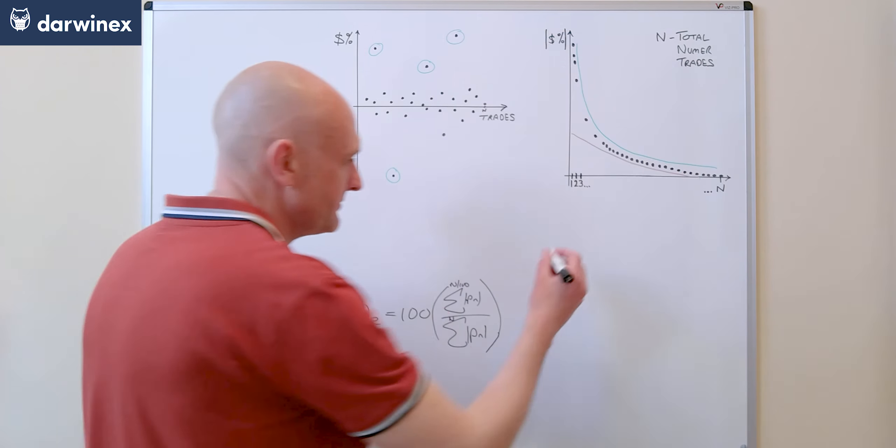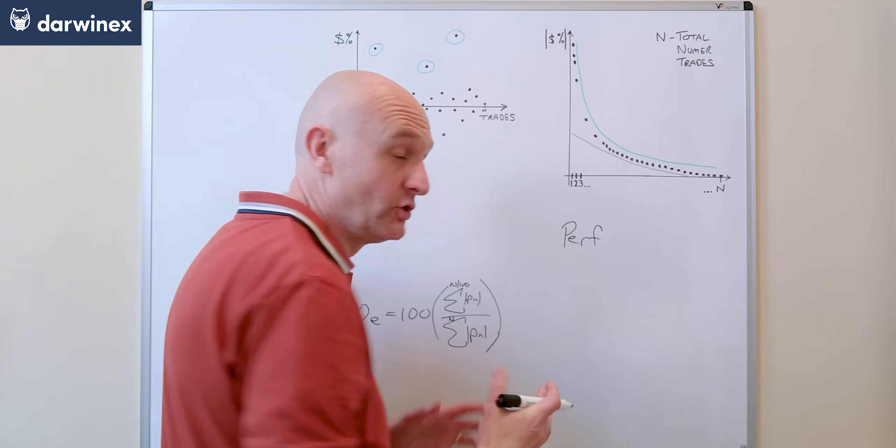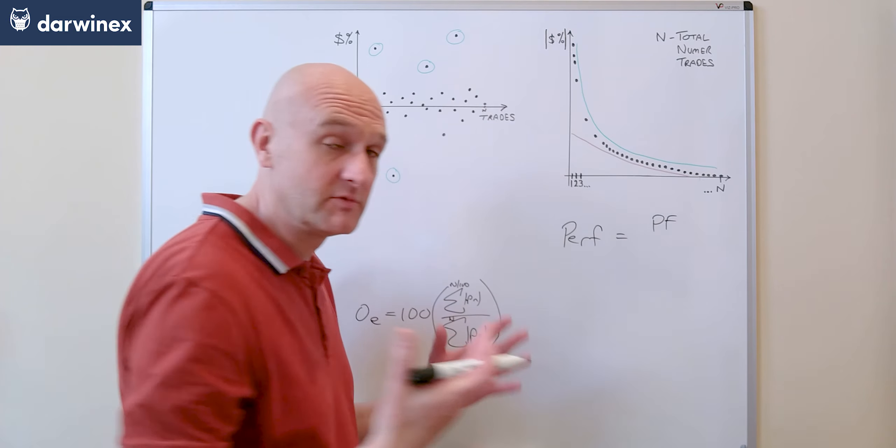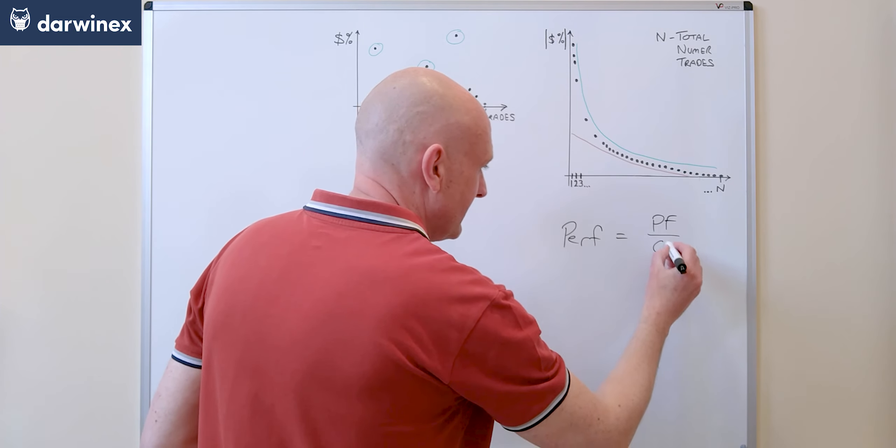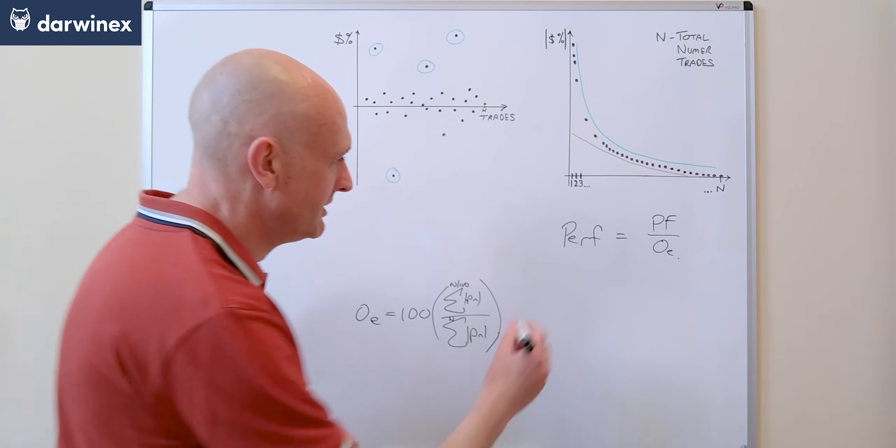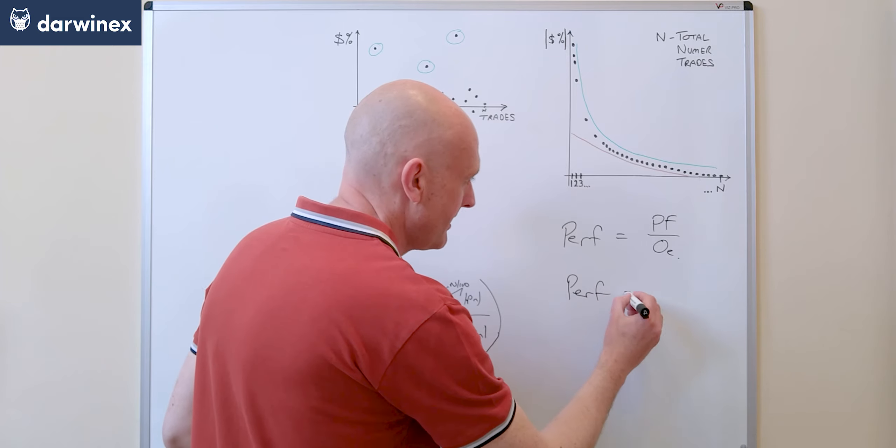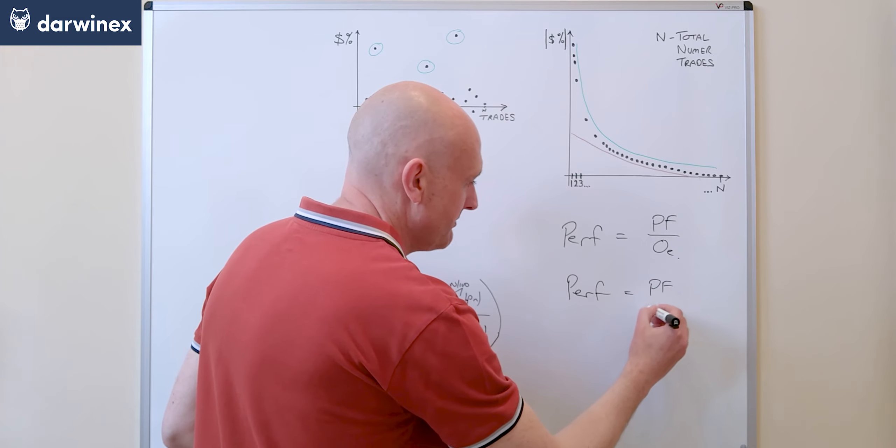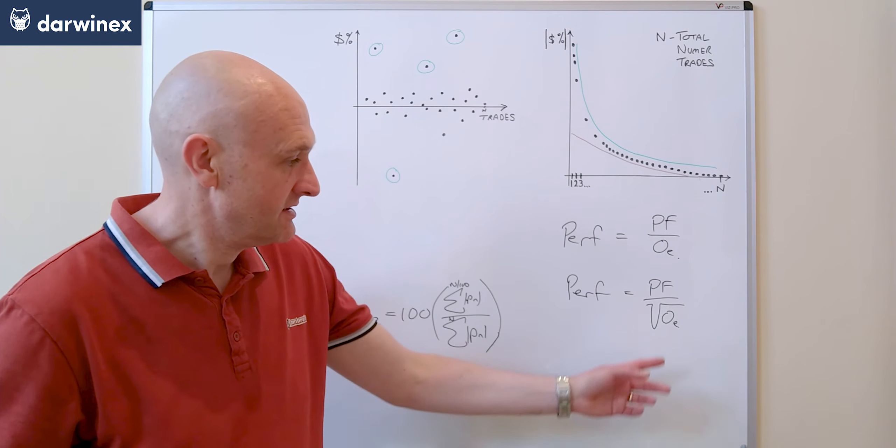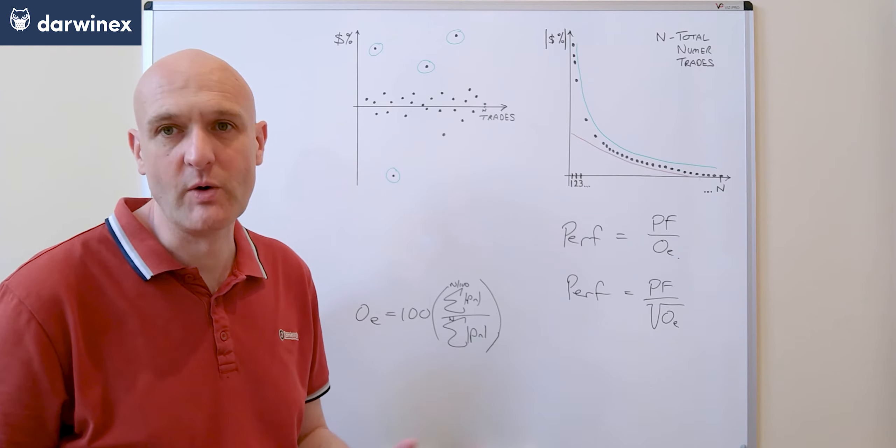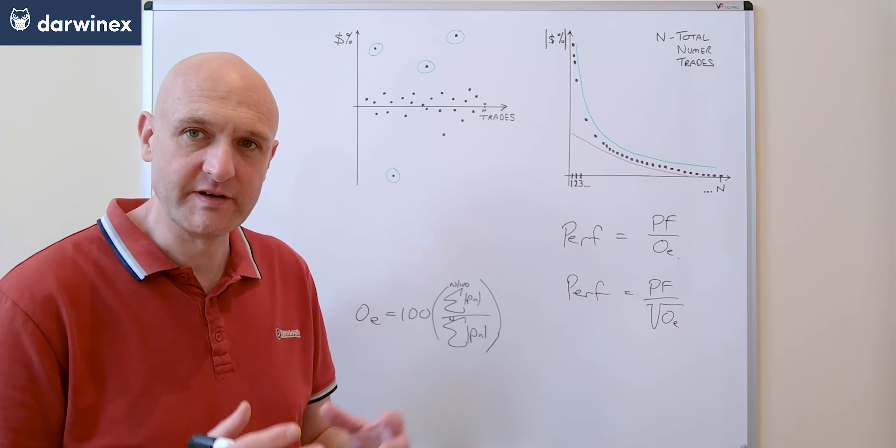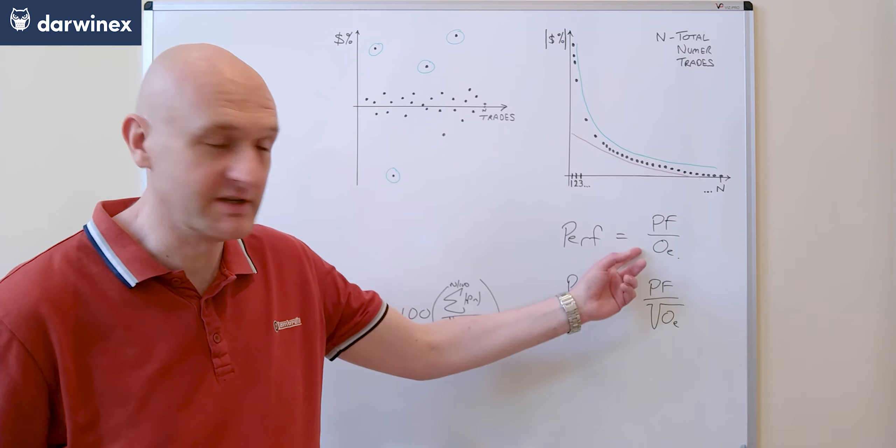So for example you might choose to modify your performance metric by taking the profit factor score and then dividing that by the events overfitting score. Or alternatively you might decide if you want to punish it slightly less then you'd use some other function like the square root and that would have the effect of reducing the profit factor for those overfitted scores but not as much as this first option here.